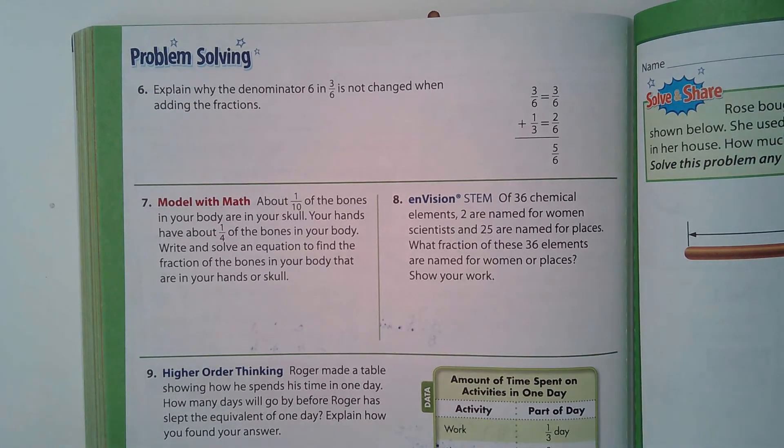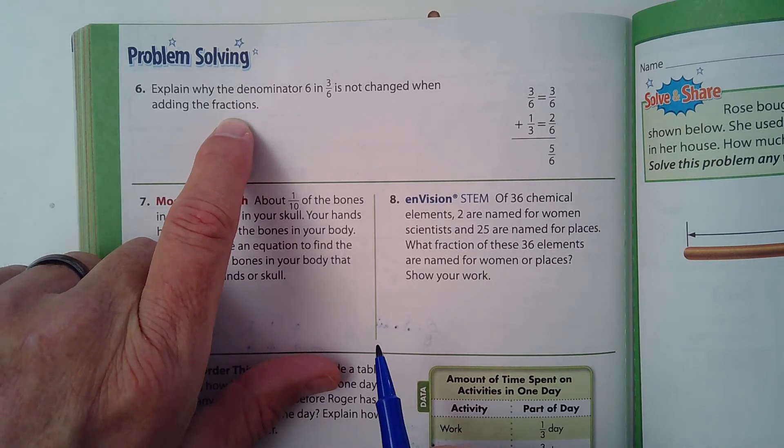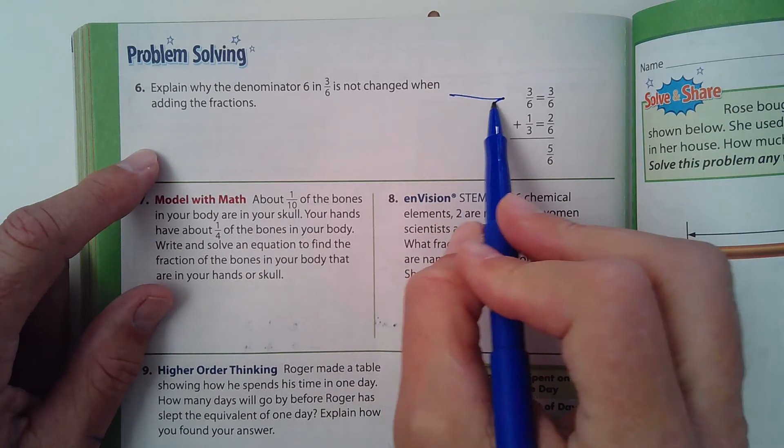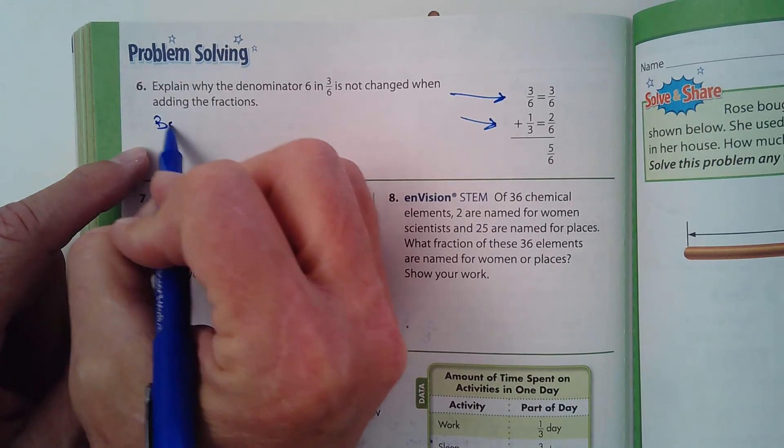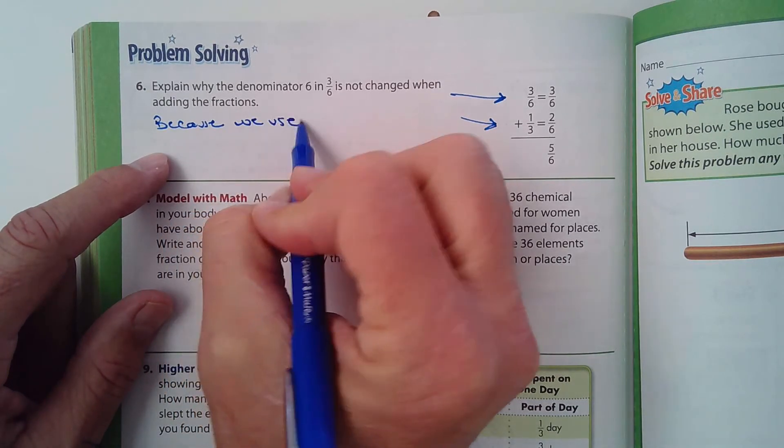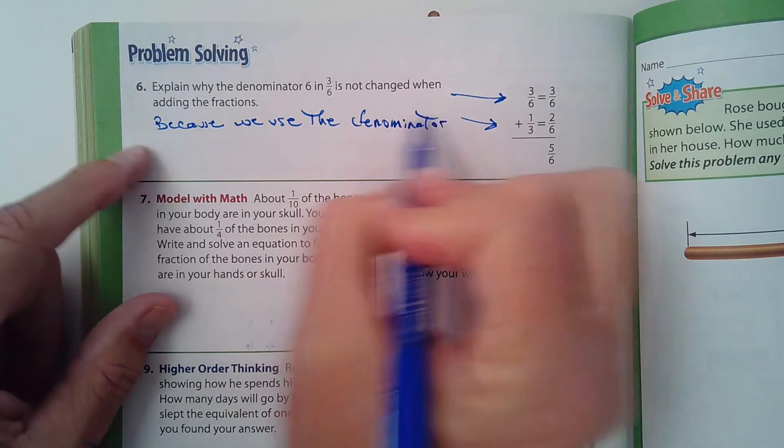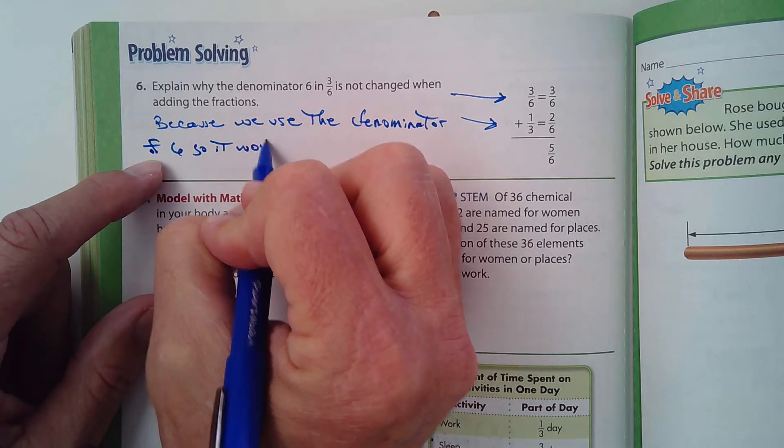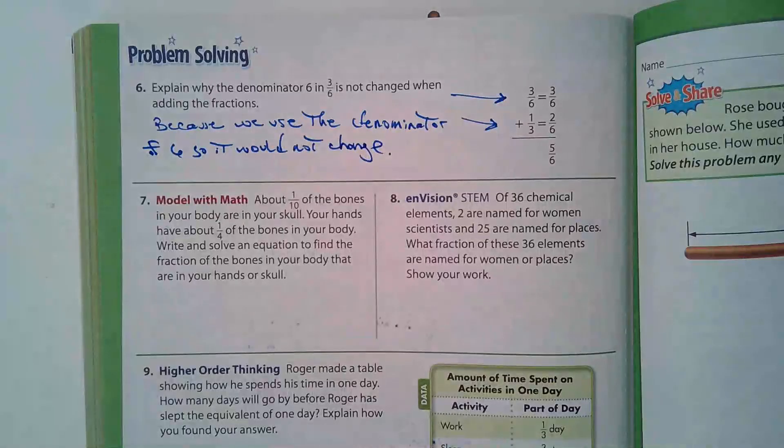Explain why the denominator 6 in 3/6 has not changed when adding fractions. Well, I guess they're talking about these two fractions right here. Because we use the denominator of 6, so it would not change. I think that's essentially what they're looking for.